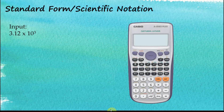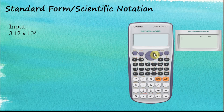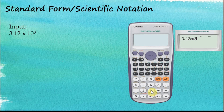This number is in standard form or scientific notation. Let's say we would like to insert these numbers into the calculators. Switch on the calculators: 3.12. To insert times 10 to the power of 3, we use this button here. For scientific notation, this is the right button to use. Times 10 to the power of 3, then equal — the answer is 3120. So 3.12 × 10³ equals 3120.